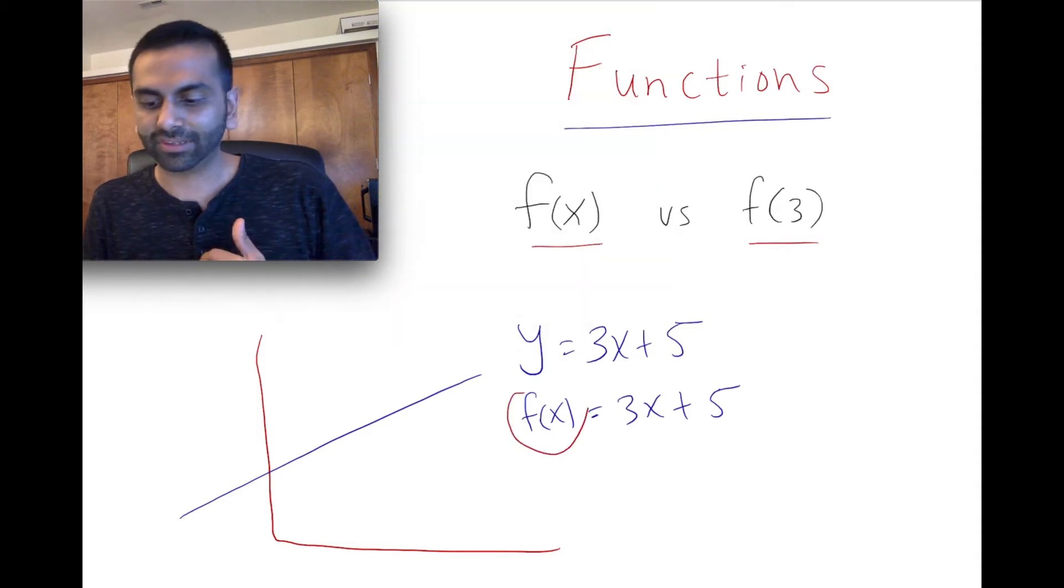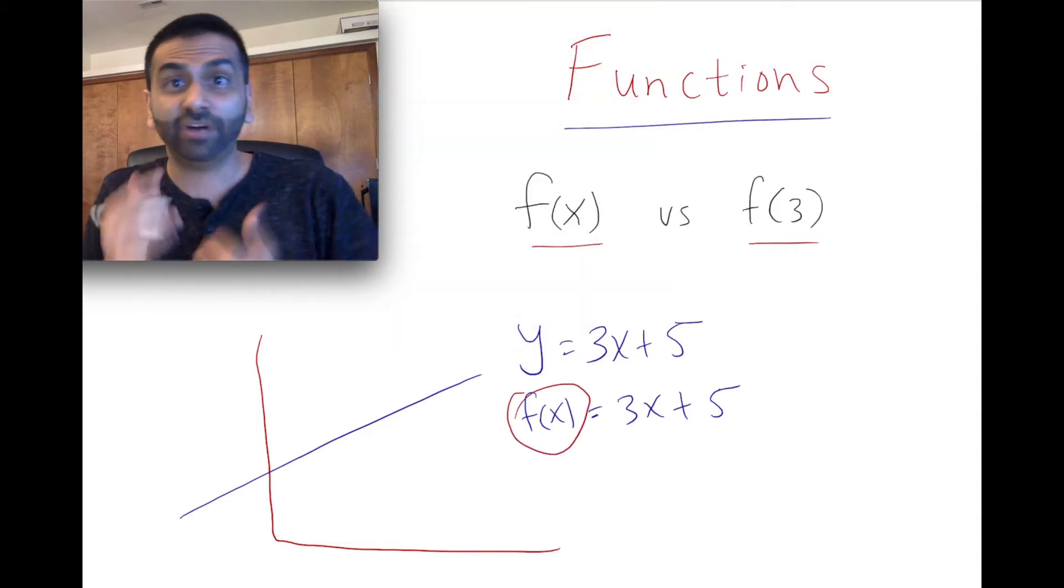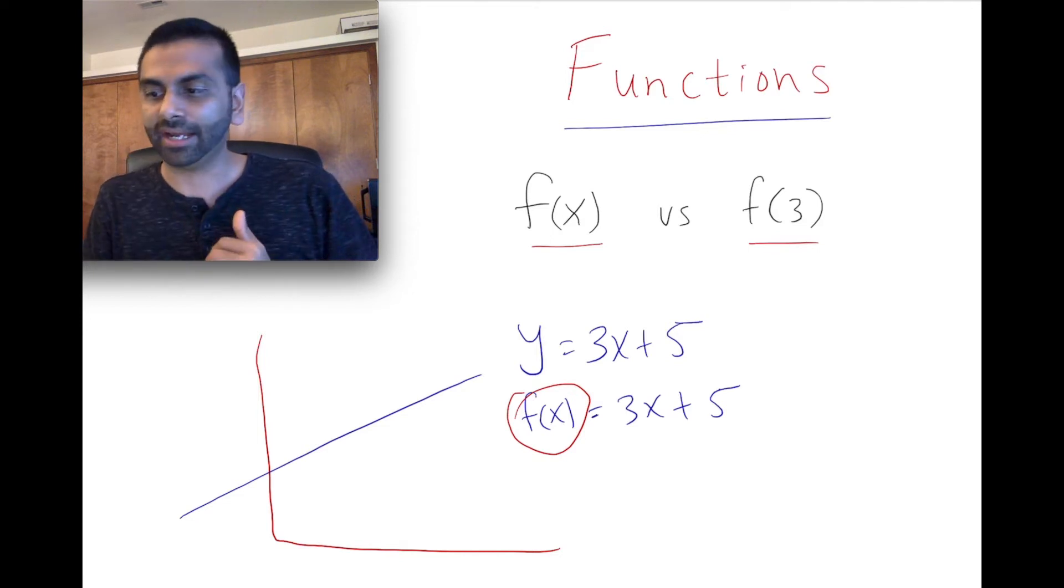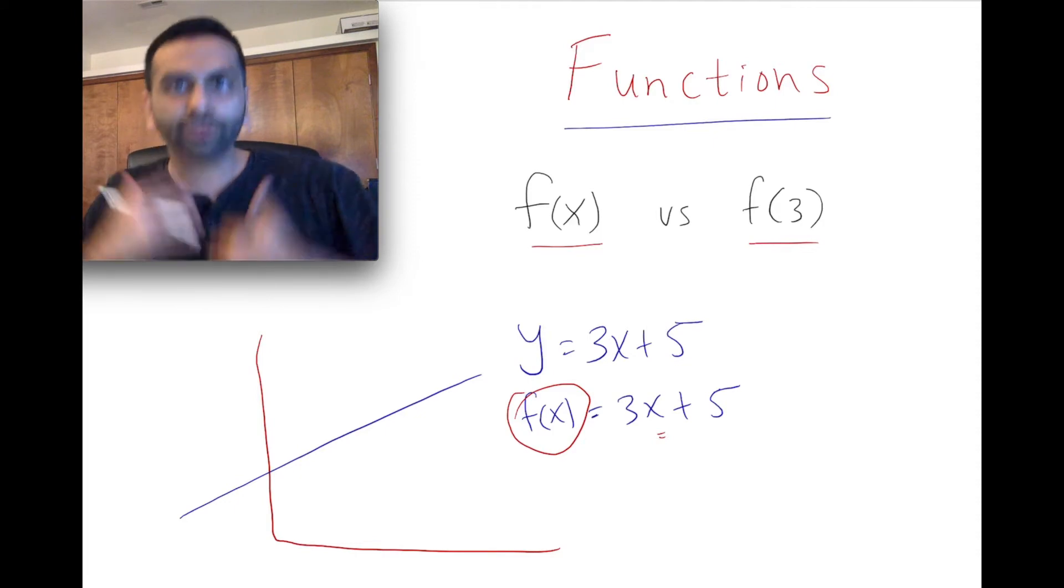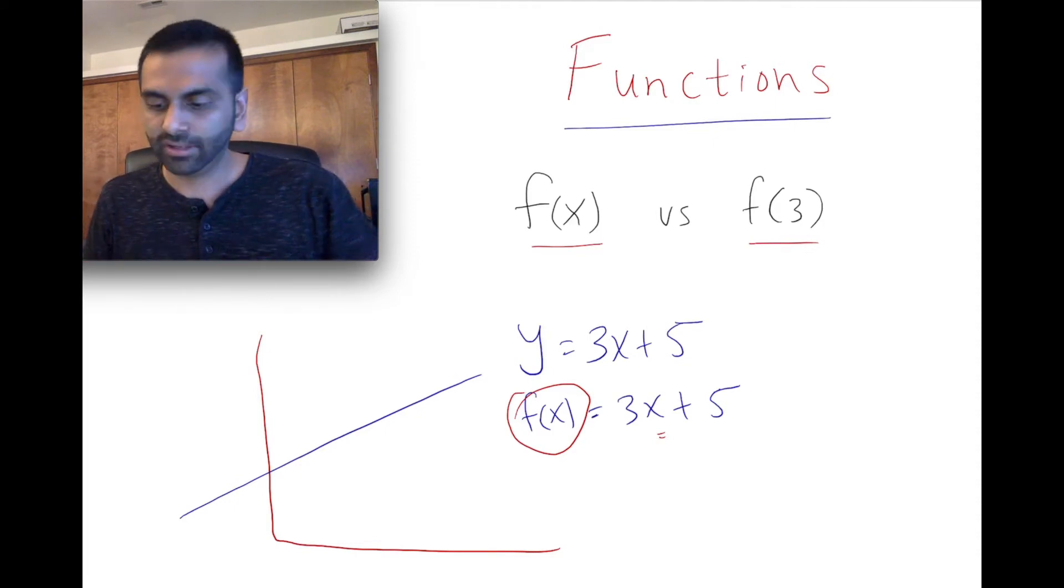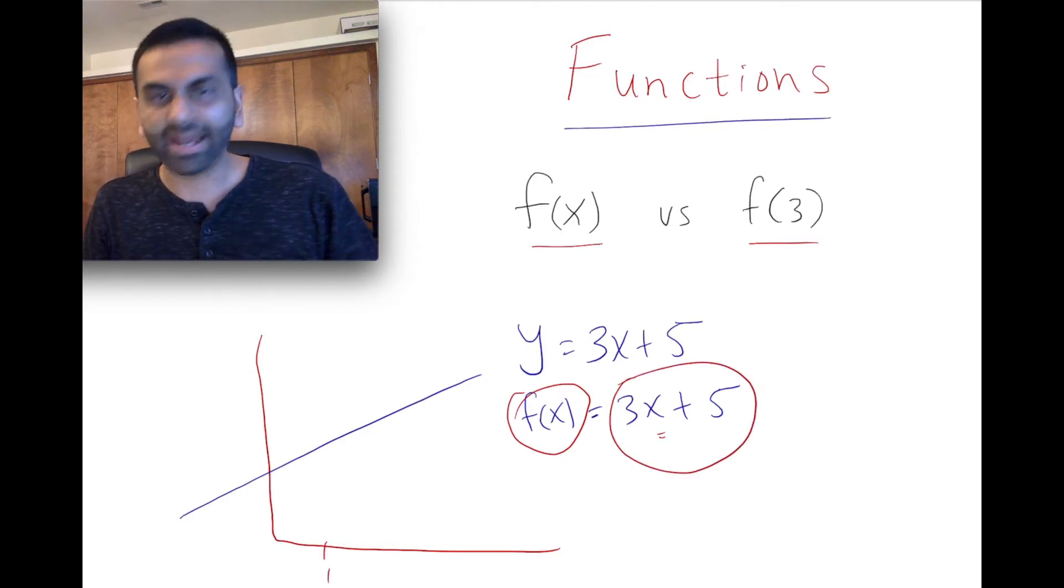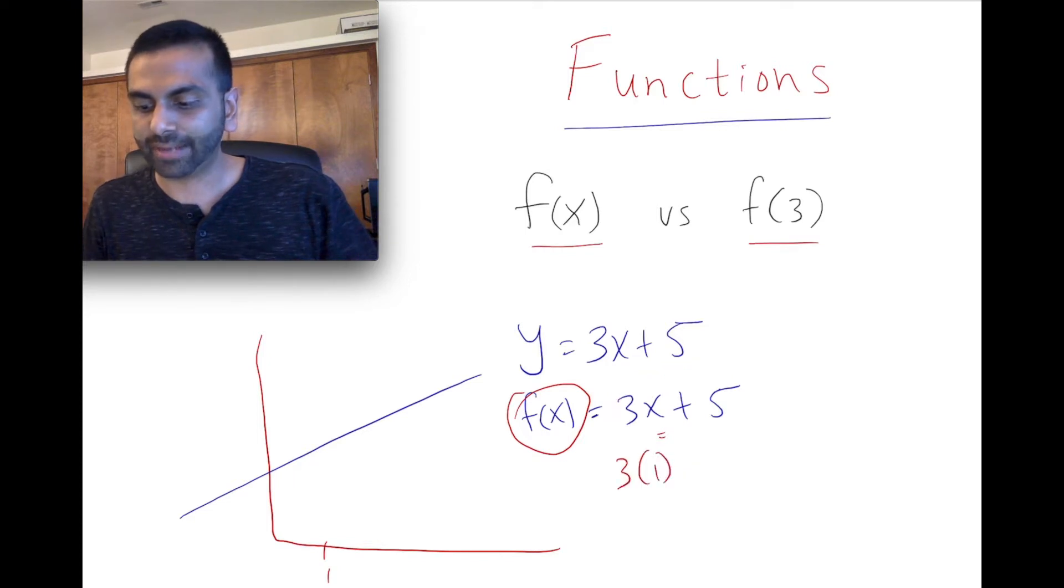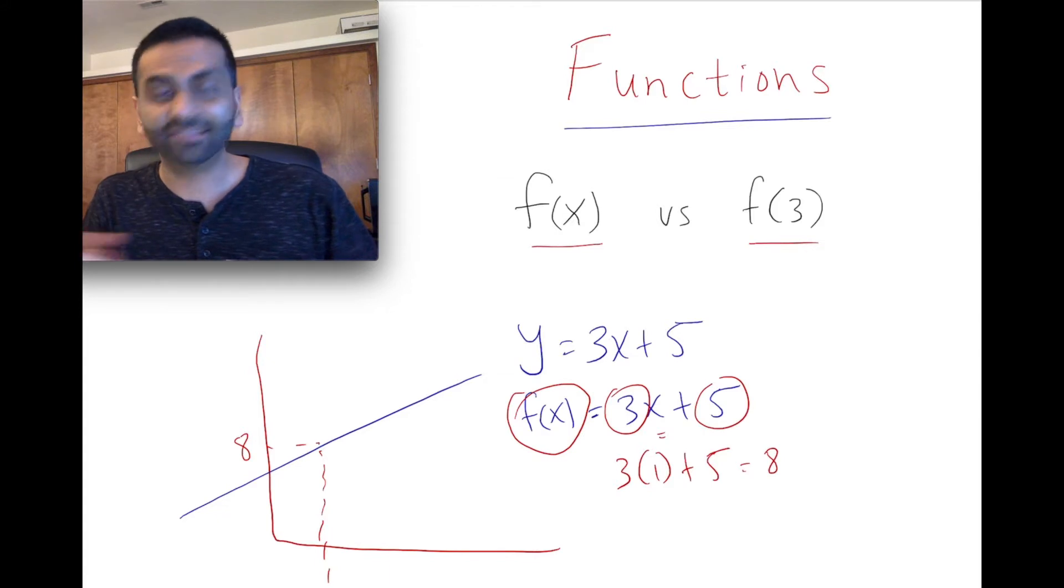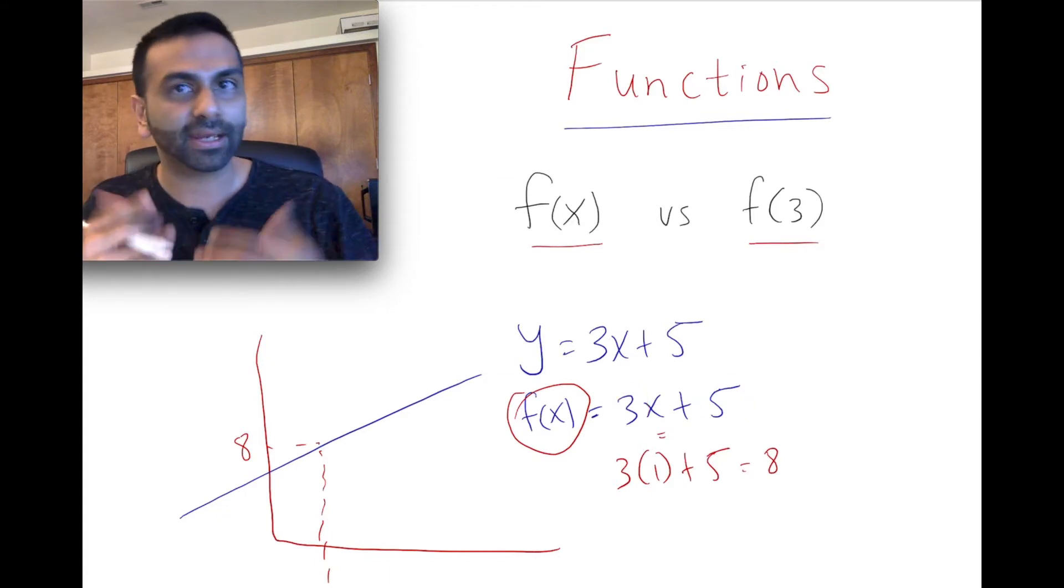It's representing a way to take the x's and turn them into something else. And you're always doing that same thing when you're turning it into something else. So for example, if x is 1, this 3x plus 5 is going to output 3 times 1 plus 5. The corresponding y value would be 8. But that process of multiply by 3 and then add 5 is the same no matter what x you plug in. That's what a function is.